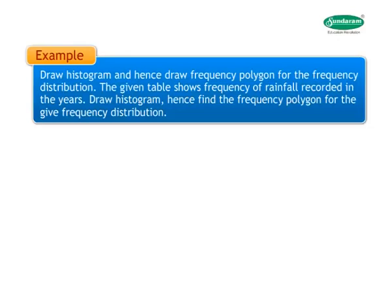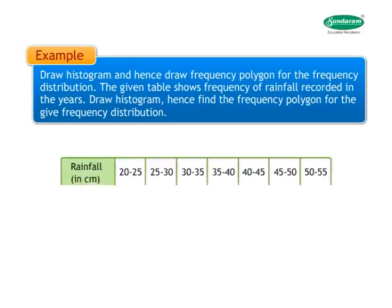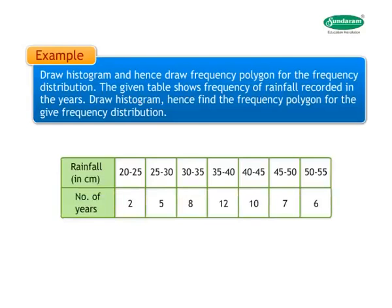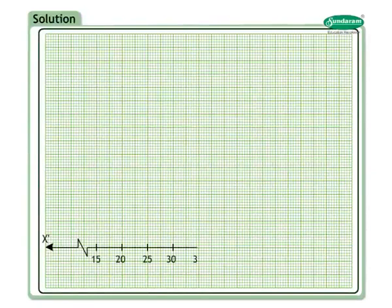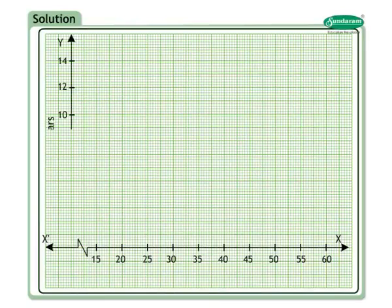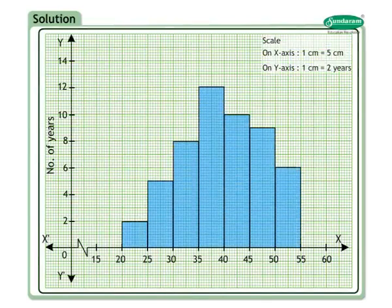Let's look at the next example in which we have to draw a histogram and hence draw a frequency polygon for the frequency distribution. The given table shows frequency of rainfall recorded over the years. First, we will draw a histogram with class intervals on the x-axis and frequencies on the y-axis.